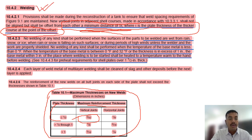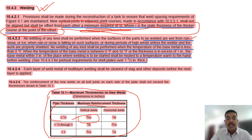No welding of any kind shall be performed when the surface of the part to be welded is wet from rain, snow, or ice, or when rain or snow is falling on such surface, or during periods of high wind unless the welder and the work is properly shielded. No welding shall be performed when the temperature of the base metal is less than zero degrees Fahrenheit. These are close-book questions.